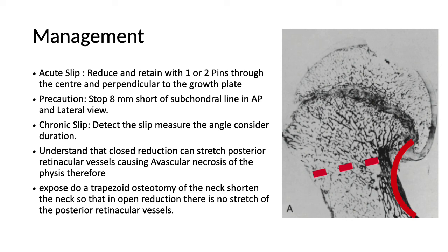In a chronic slip, you must detect the slip and the angle of the slip, consider the duration, and understand that closed reduction can stretch the posterior vessels. Because the epiphysis has slipped posteriorly, the posterior retinocular vessels are short. You must perform an open reduction, excising the trapezoid-shaped portion of the neck before reducing it, so you do not stretch the posterior retinocular vessels and do not produce avascular necrosis. This is called a trapezoid osteotomy of the neck of femur in chronic slip.